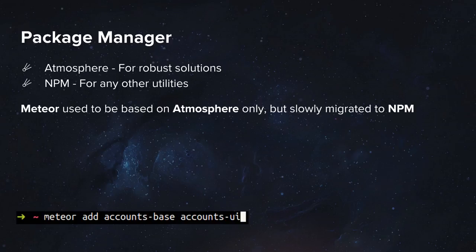With that said, Atmosphere is still pretty useful when you want full robust solutions. For example, if you would like to have an authentication system, the only thing you would have to do — without even defining anything — is simply install a few packages. You install the accounts-base package, which defines all the right publications, all the right MiniMongo collections, and all the right methods so you can work with an authentication system. And accounts-ui is basically a package which provides you with Blaze template helpers so you can define a register button, login, login using Facebook, login using Twitter, etc.